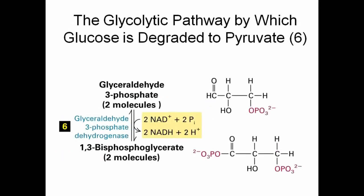In the next step, the glyceraldehyde 3-phosphate produced in the earlier step is dehydrogenated and simultaneously phosphorylated to produce 1,3-bisphosphoglycerate, with the help of NAD. This is a reversible reaction.